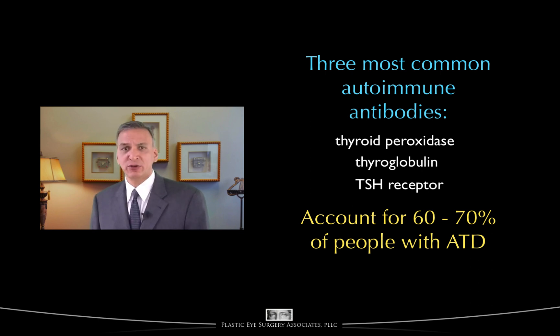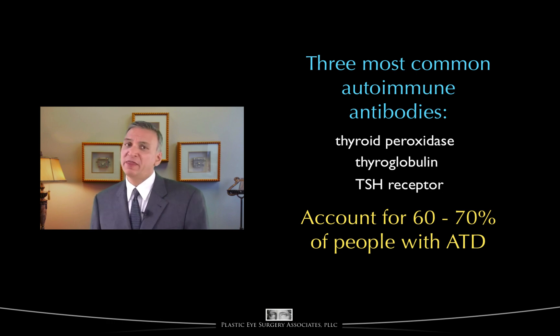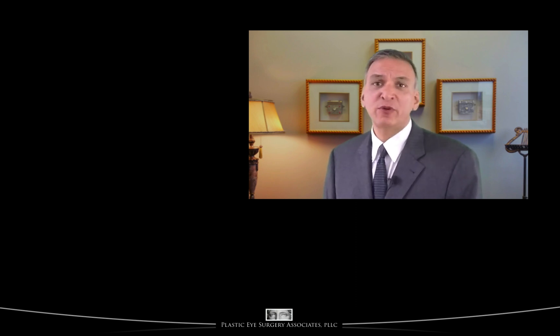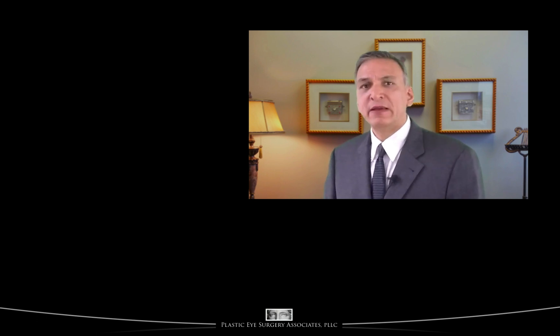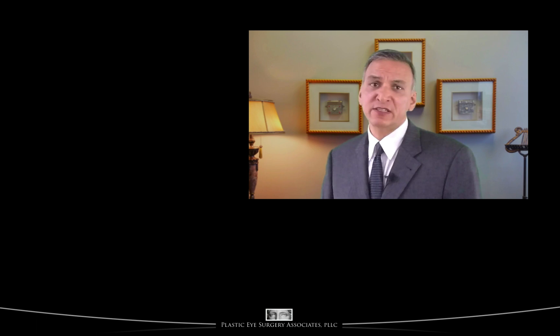These blood tests are usually covered by insurance because the antibody tests are commercially available. However, the testing for many of the other antibodies is not commercially available, and is thus generally viewed as 'experimental' by insurance companies, and thus not covered. Research suggests that many people with ATD actually have more than one autoimmune antibody targeting thyroid hormone production. For example, someone with ATD against the TSH receptor may have different kinds of stimulatory antibodies, or they may have both inhibitory and stimulatory ATD that bind to the TSH receptor, as we've already discussed in prior videos.